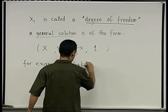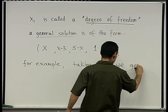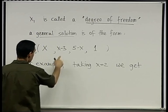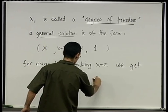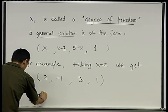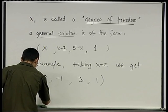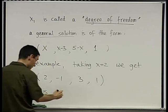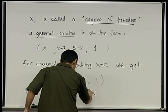For example, taking x equals 2, we get 2, minus 1, 3, 1. And this is called a particular solution or a specific solution.